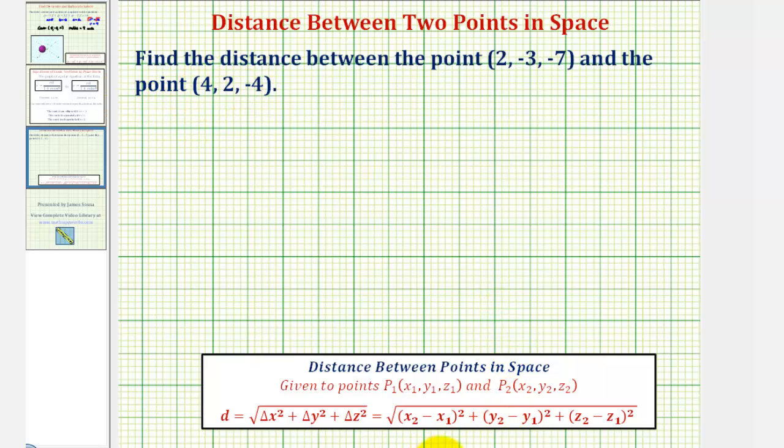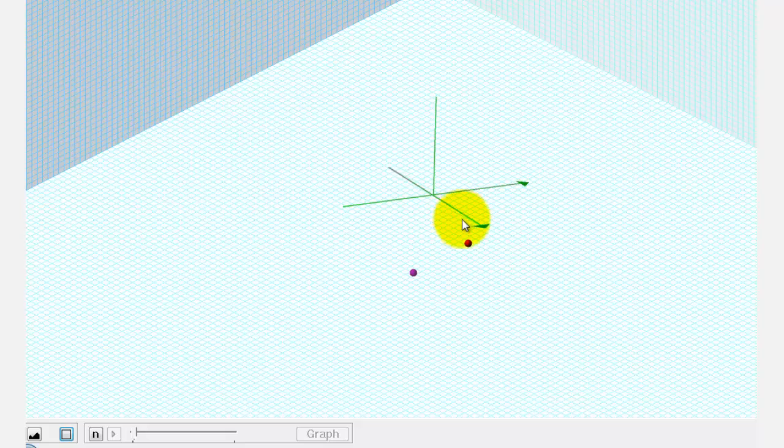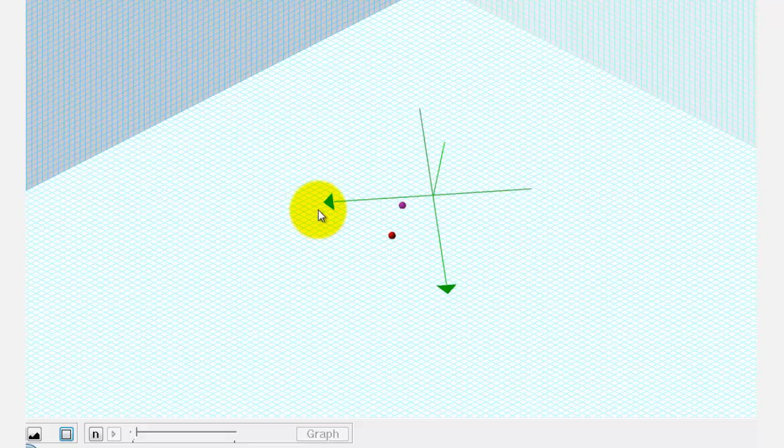If we graph these points in space, the two points look like this. Our goal is to find the distance between these two points.